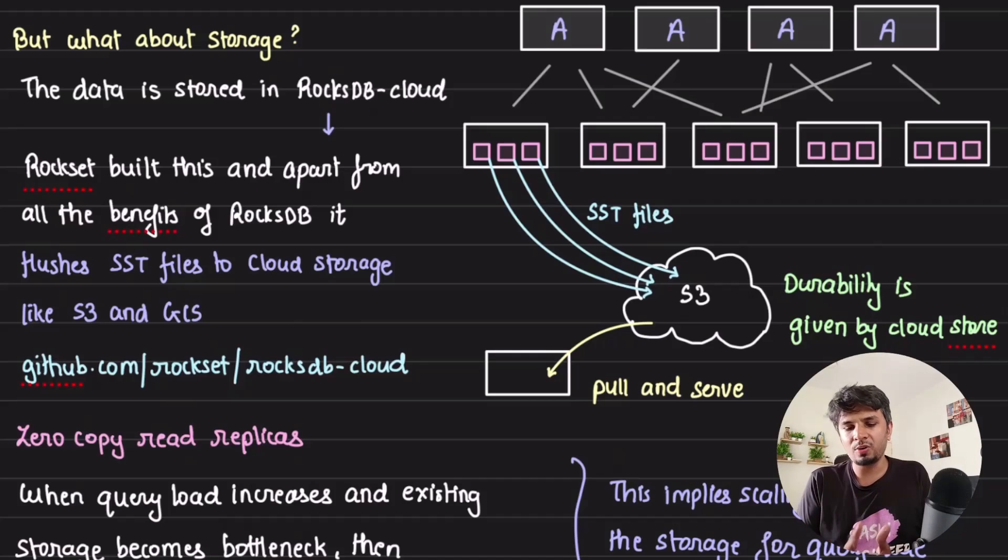In this one we spoke about how it executes the query and how it is horizontally scalable - how it scales compute, how it scales storage, and how it saves cost and handles bursts. Yeah, this was the third video of my series. I hope you found it interesting. Hope you found it amazing. That's it for this one. I'll see you in the next one. Thanks a ton.